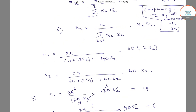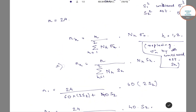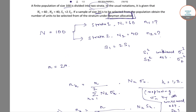Therefore, n1 equals 18 — the number of samples to be selected from strata 1 — and n2 equals 6 — the number of units selected from strata 2. This is the answer to this question.